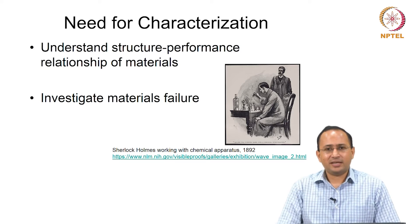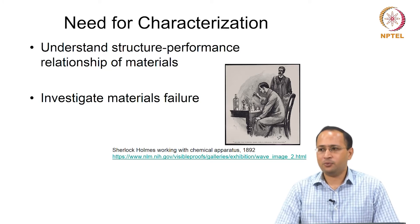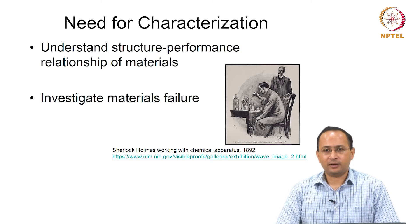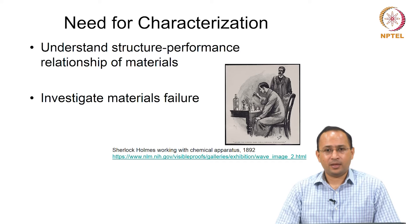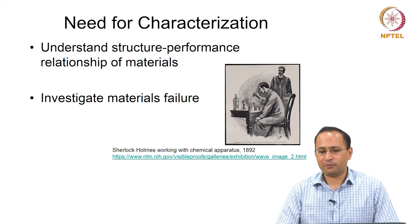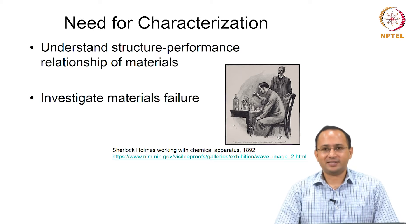Characterization can help us understand better the structure-performance relationship of materials. One simplest example could be the difference between diamond and graphite — both are forms of carbon but exhibit very different properties. What makes it so that in one form of carbon you have very different properties than the other? We are targeting structure-performance relationship.